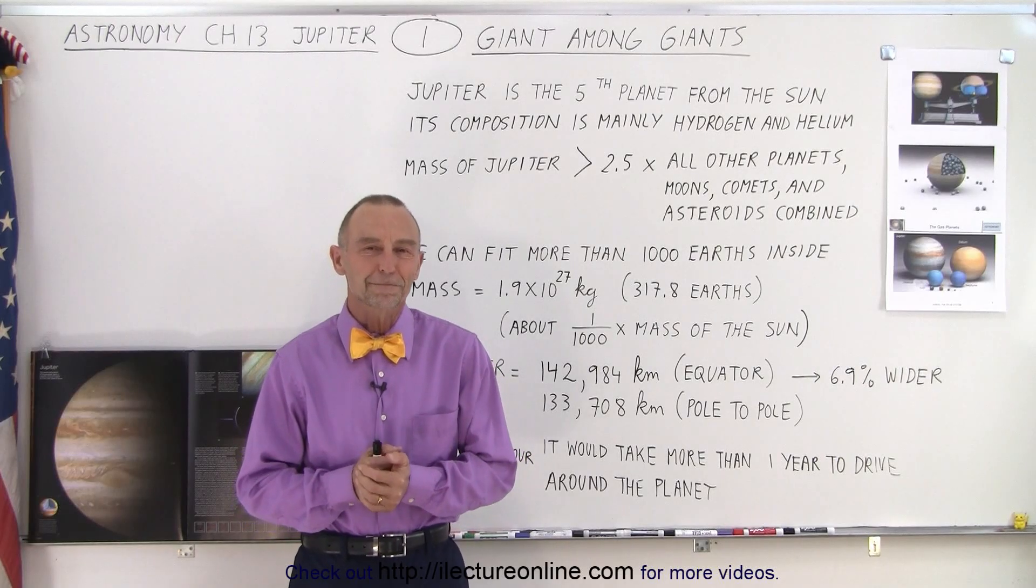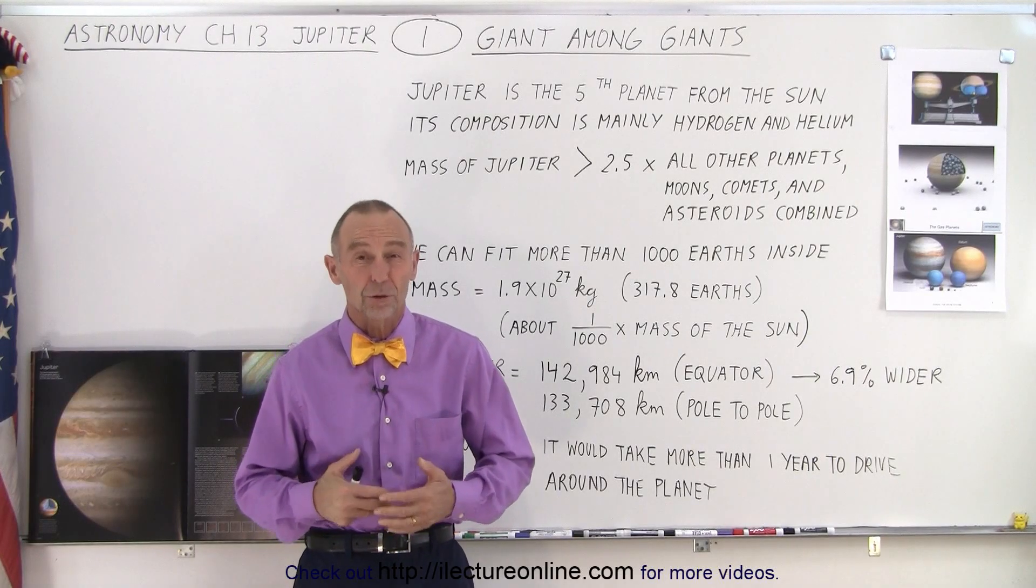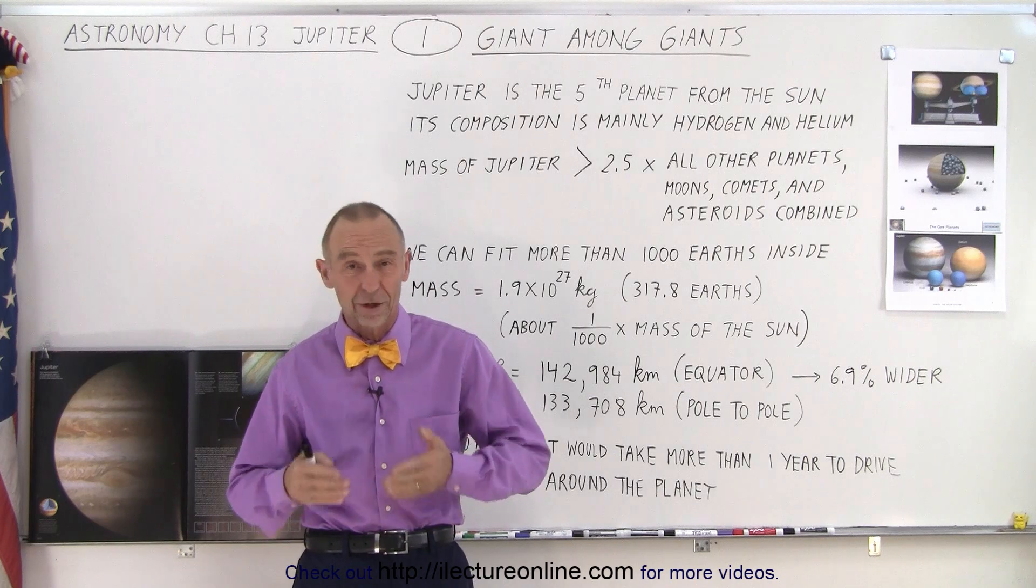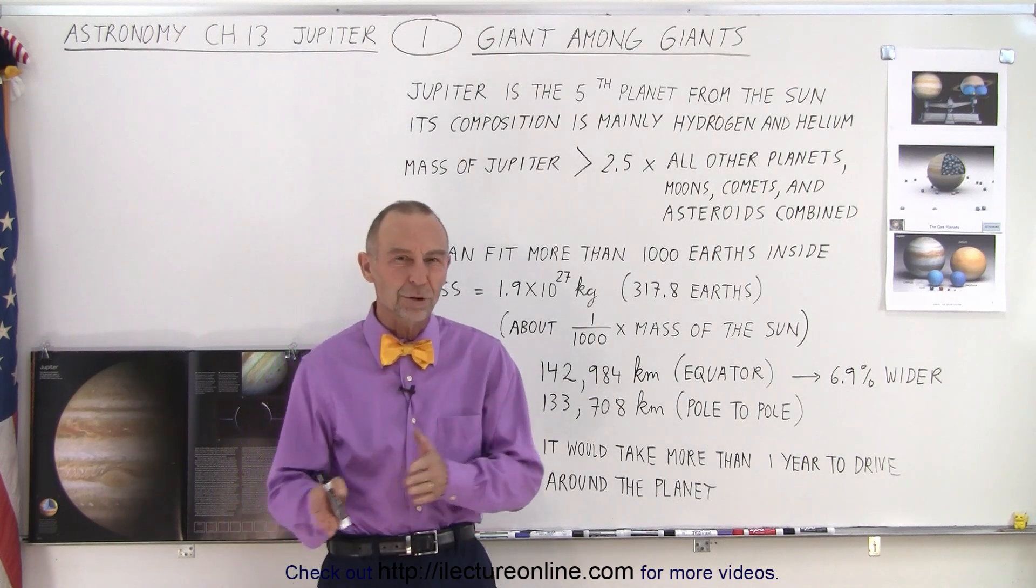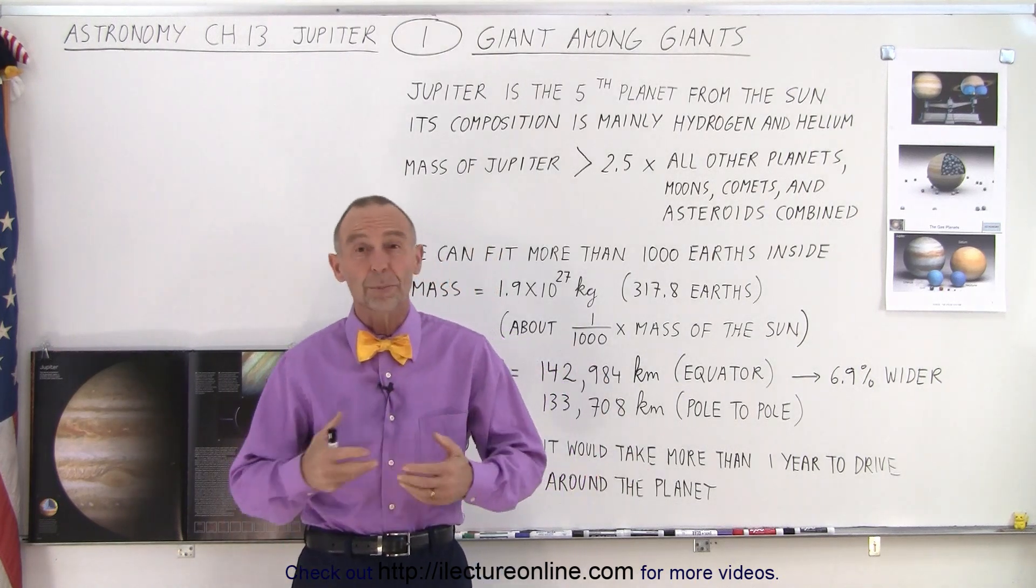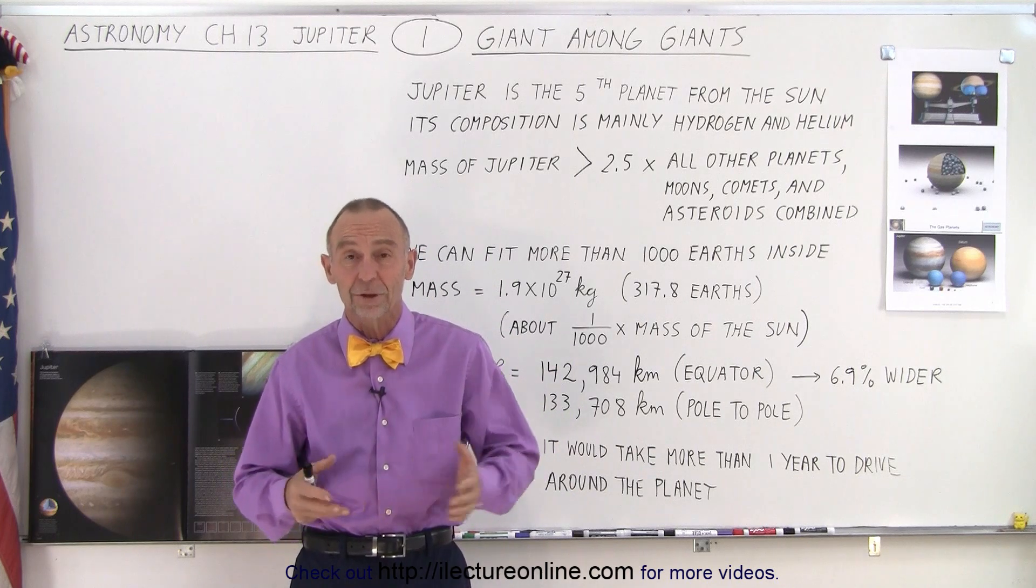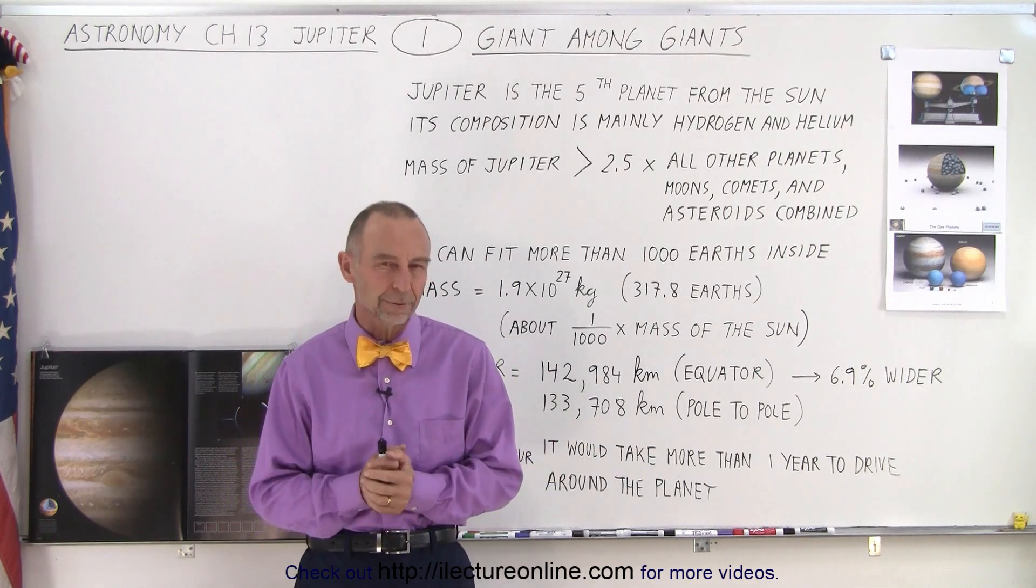Welcome to Electronline. Here we're starting the chapter on Jupiter. Now that we've finished the inner solar system, we're moving out to the outer solar system, and Jupiter is indeed the first planet of the outer solar system past the asteroid belt.